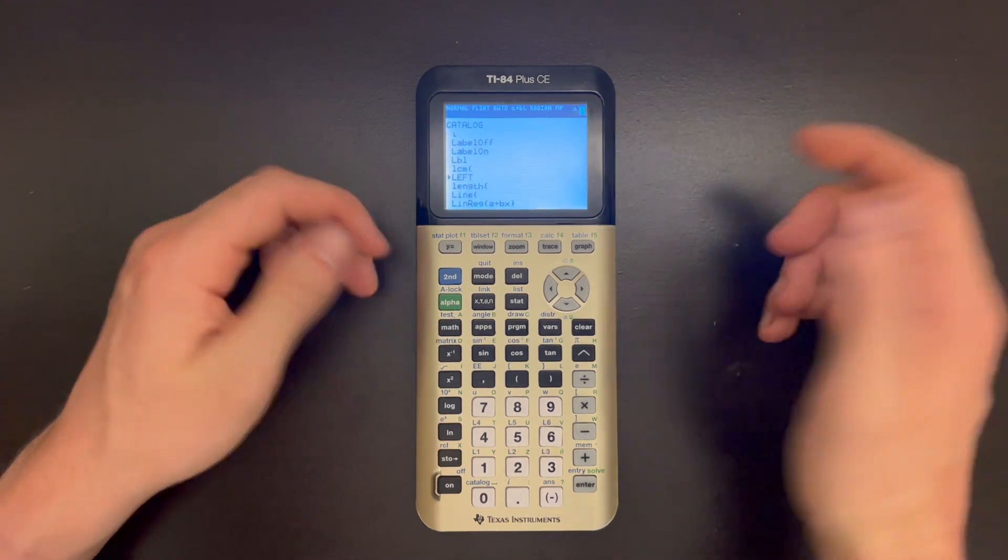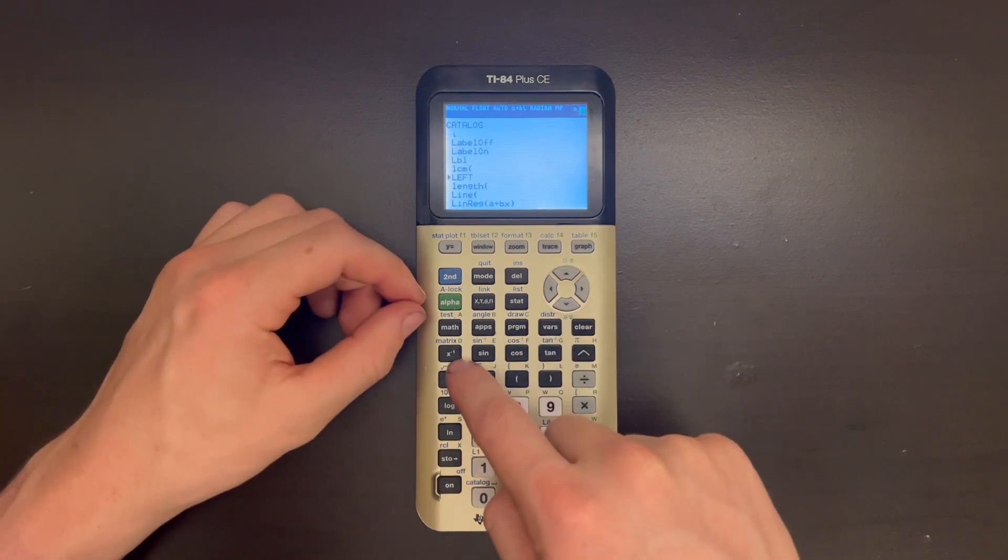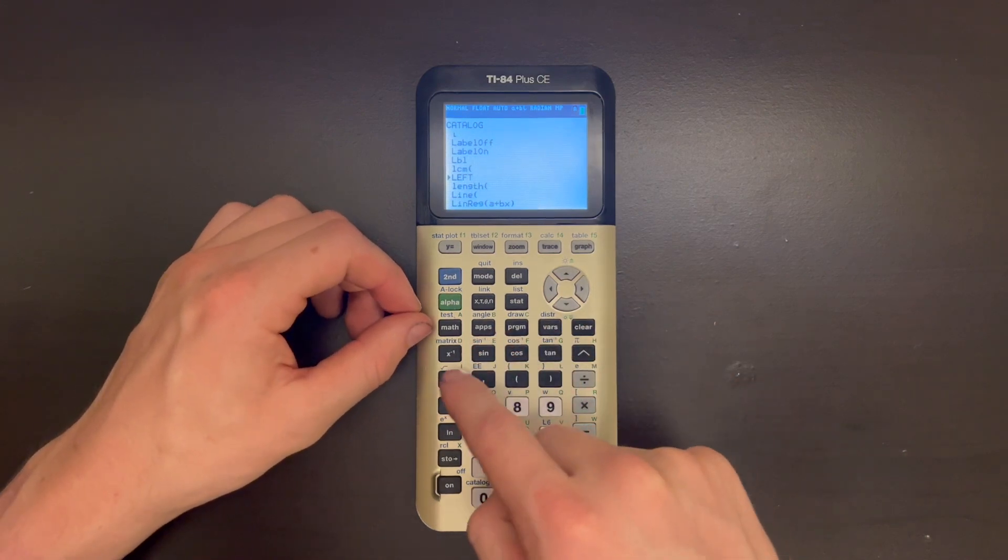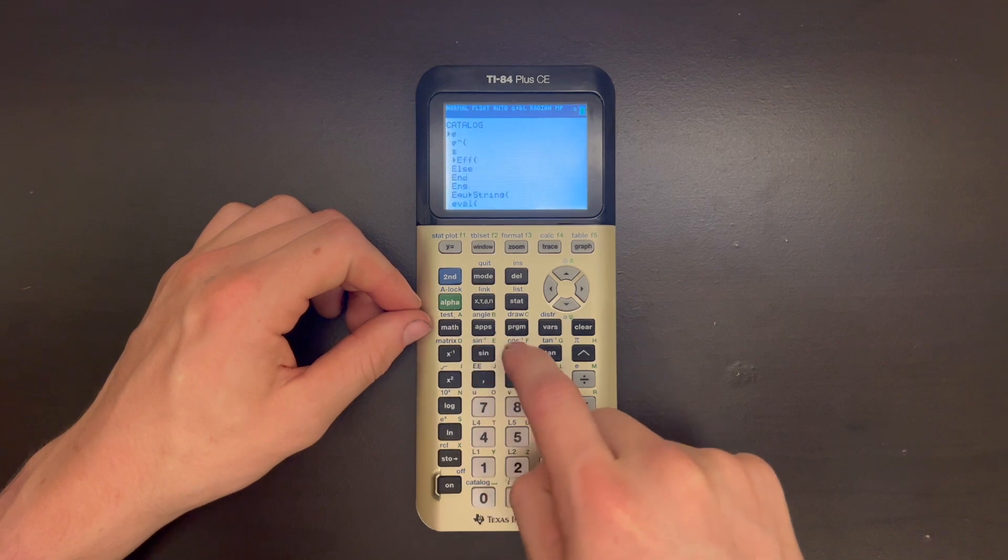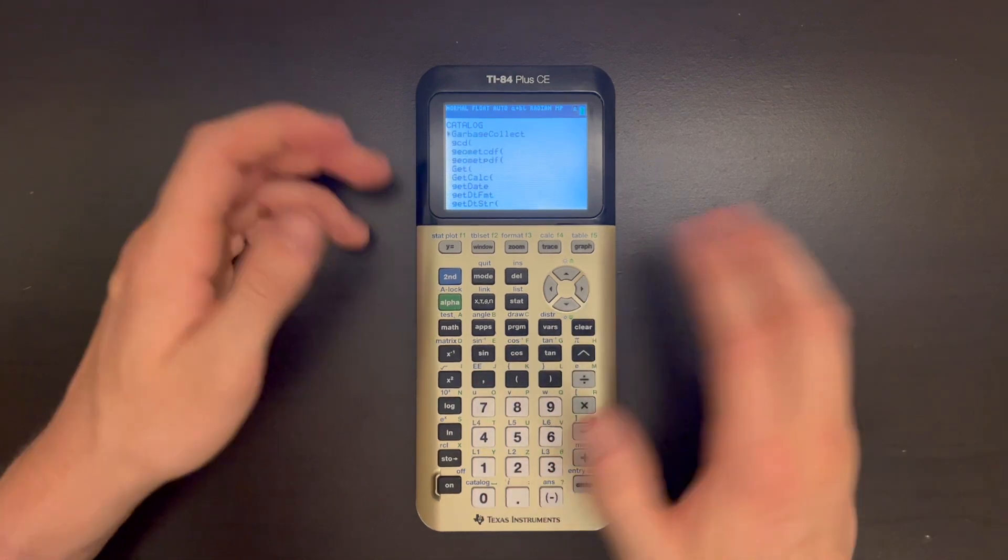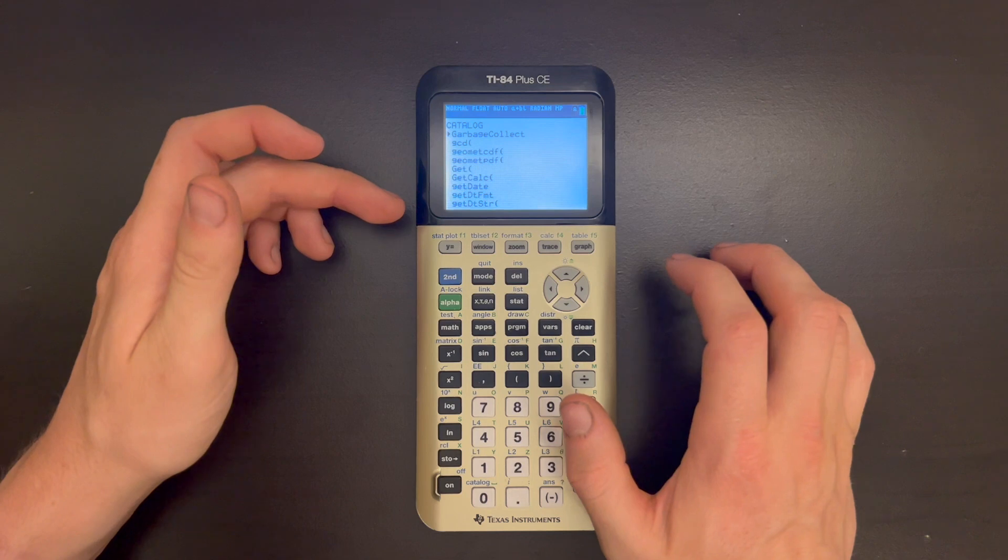So if you want to jump anywhere else, you can just keep pressing the keys that correspond to the letter you want. So D, E, F, G, etc. And then that'll just jump you to the section in the list.